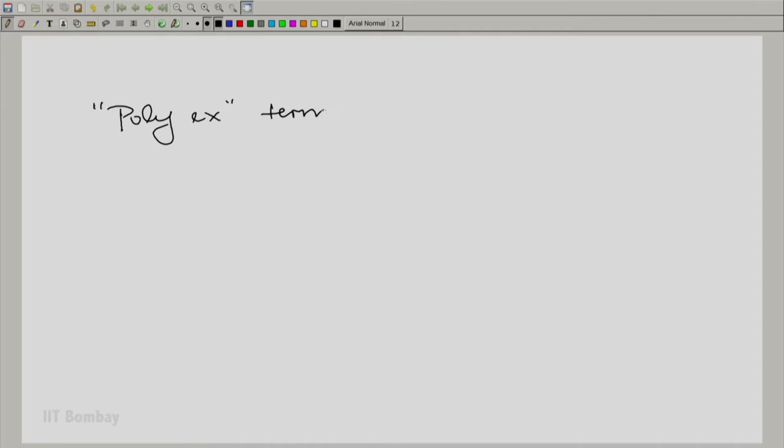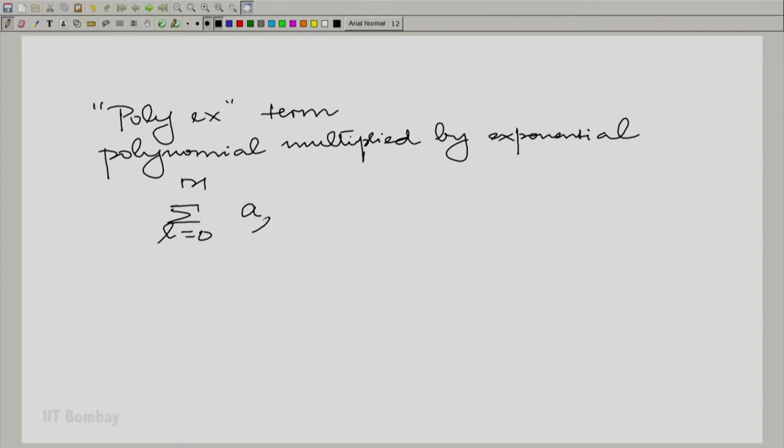Let us write it down again. Polynomial plus exponential, or polynomial multiplied by exponential. What is the general form? I am showing the continuous time form: summation l going from 0 to m, a_l t raised to the power l times e raised to the power minus alpha t times u(t).